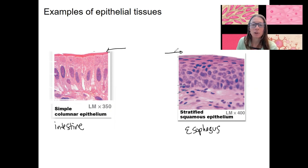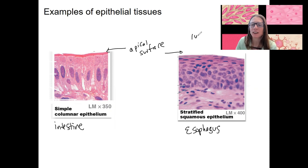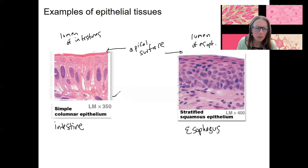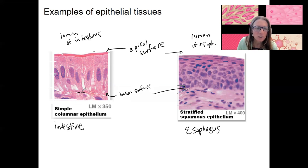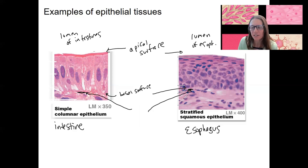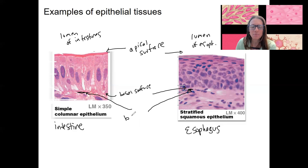In both cases, there is an apical surface — not just necessarily the top, but the side that connects to the lumen of the esophagus or the lumen of the intestines. That means we have a basal surface at the bottom. You can actually see the basement membrane here — that's connective tissue. The basal surface is the bottom side, and the apical surface is the top side.